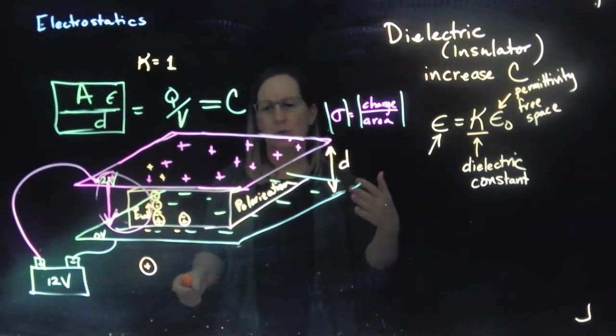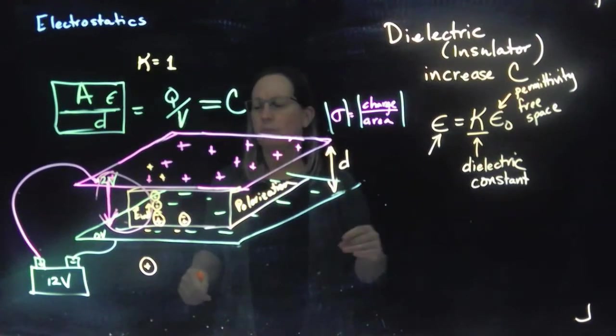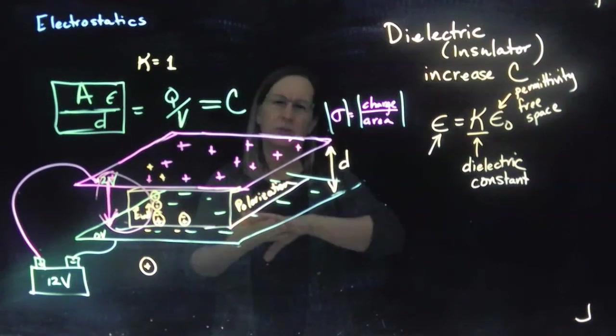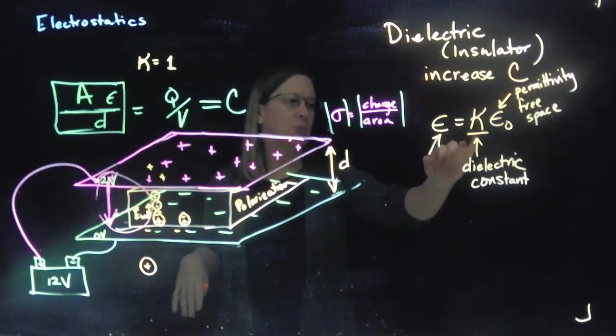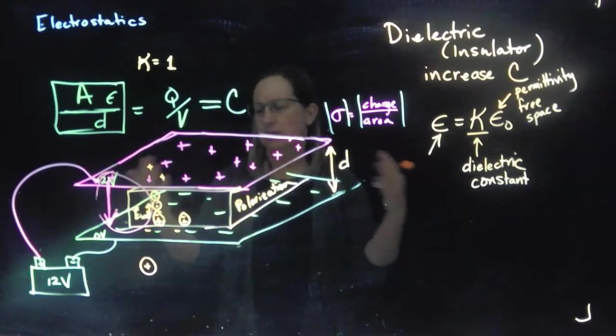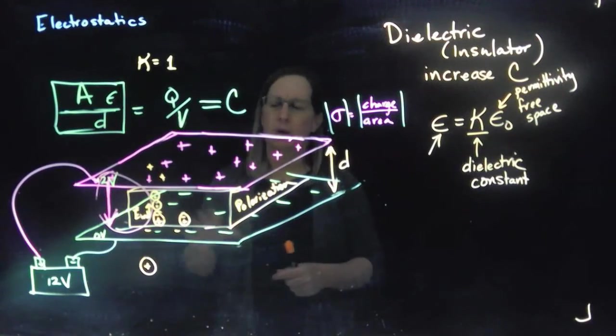So you'll see capacitors that have paper between them or paper often with some oil because oil has a pretty high dielectric constant. And so that's common in fairly big capacitors.